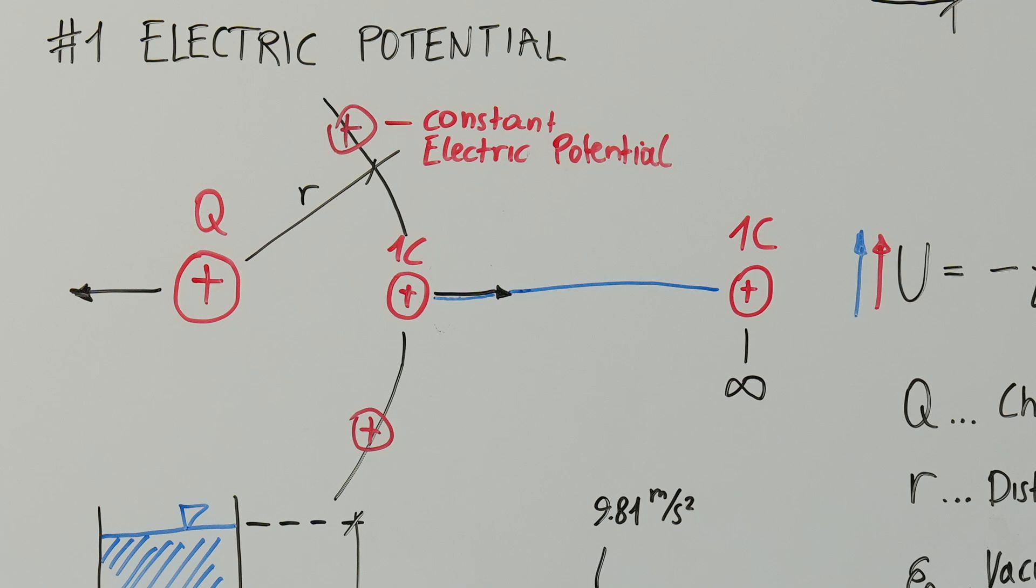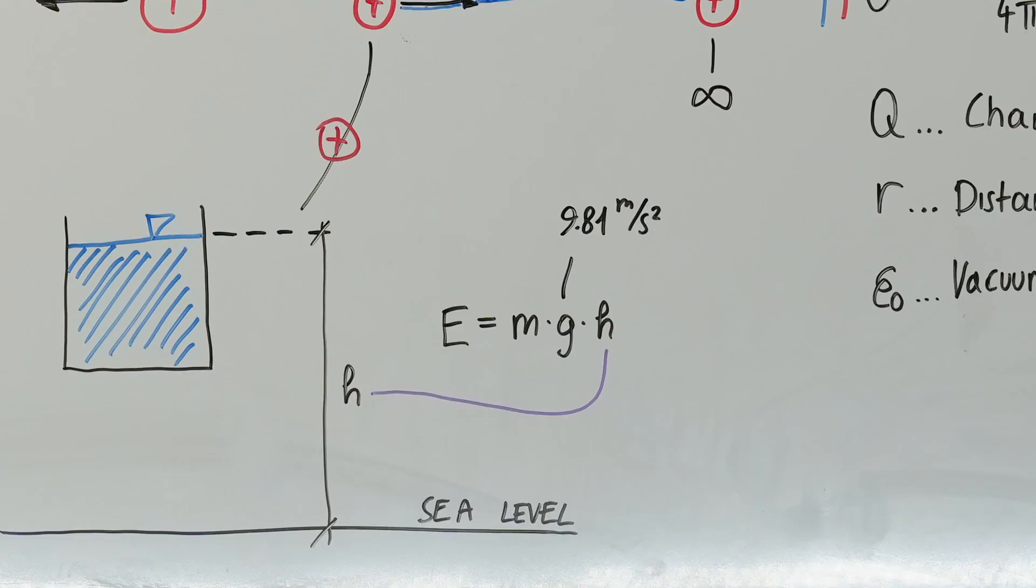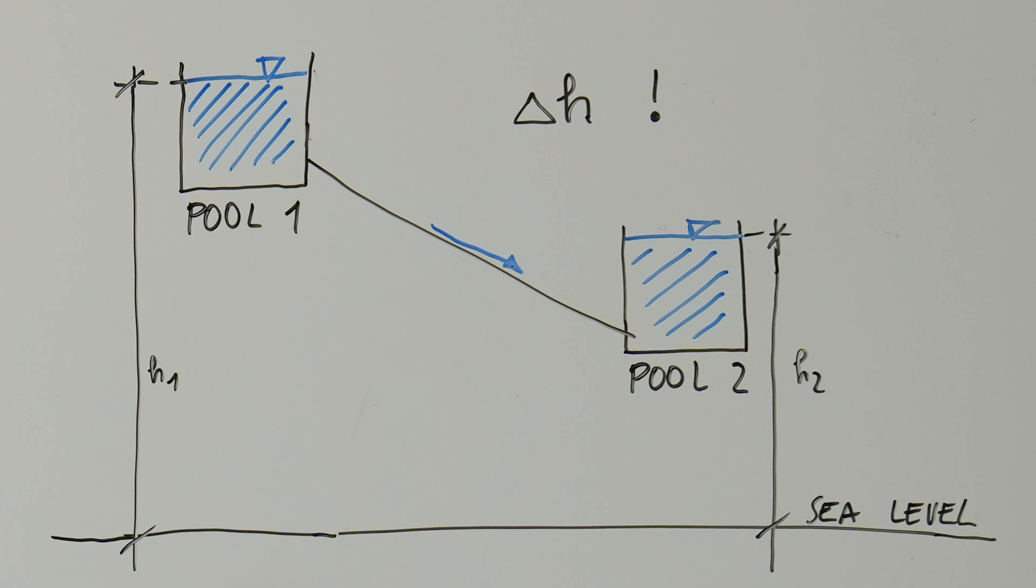So, the electric potential resembles the altitude of the water level in a pipeline system. If we only have one unconnected pool, no water will flow. If we then connect pool one to another, water will flow. How fast it will flow depends only on the difference in altitude of the water levels.